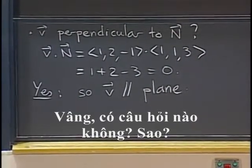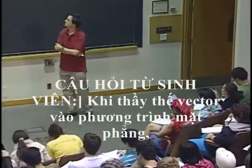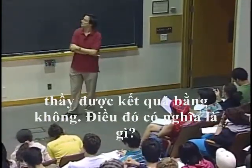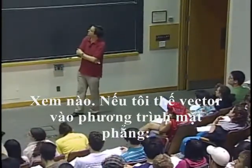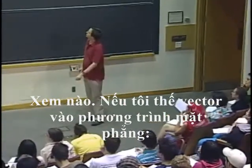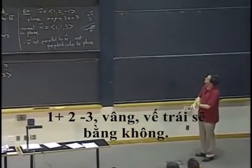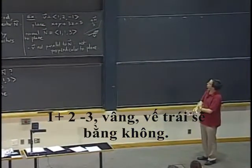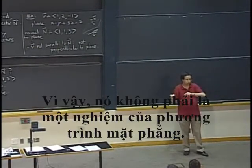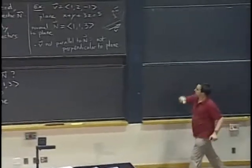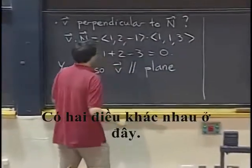Any questions? Yes? When you plug the vector into the plane equation, you get zero. What is the significance? When you plug, let's see. So, if I plug the vector into the plane equation, so x1 plus 2 minus 3, well, the left-hand side becomes zero. So, it's not a solution of a plane equation. OK? So, I should say, OK, so there's two different things here.